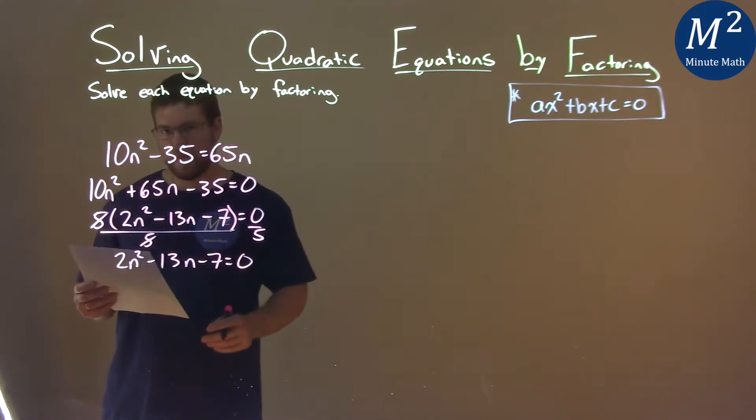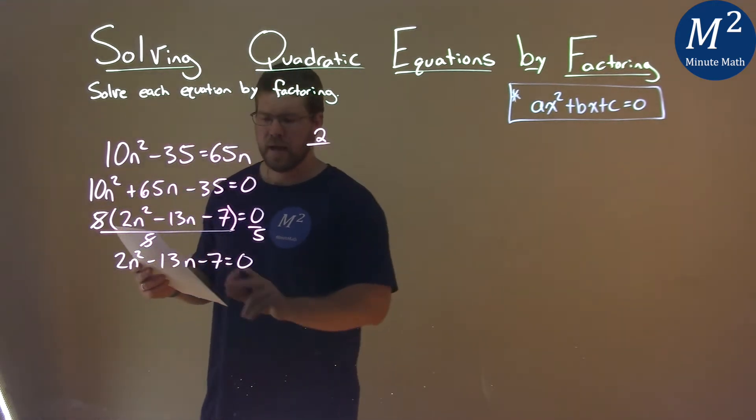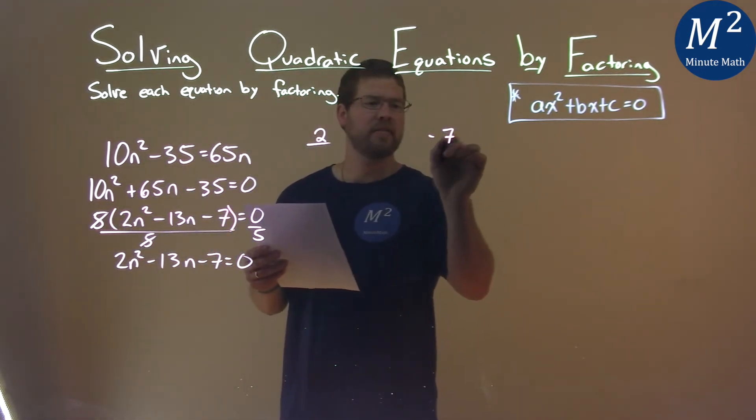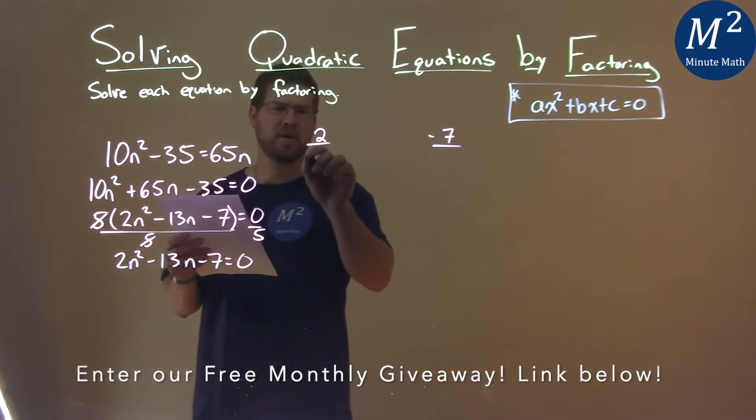So now we have to factor this. A little tricky. Our a value is 2, and our c value is negative 7. Two numbers that multiply to be 2 are just 1 and 2.